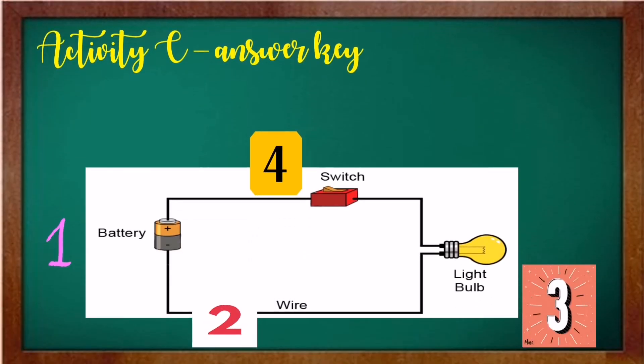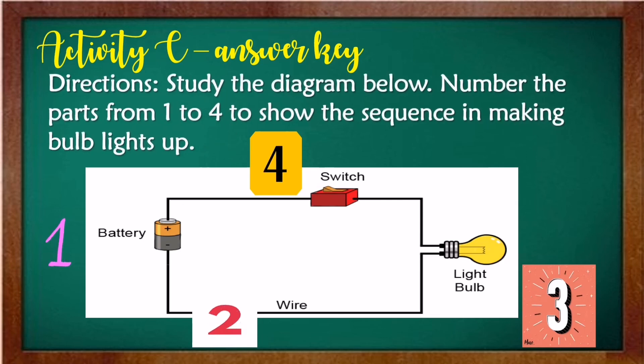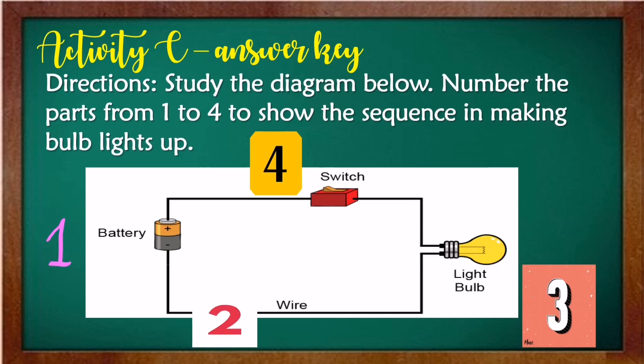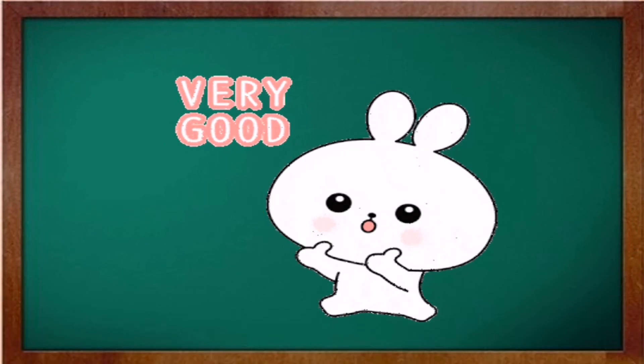So, the answers are one is battery, two, wire, three, bulb, and number four, switch. Very good.